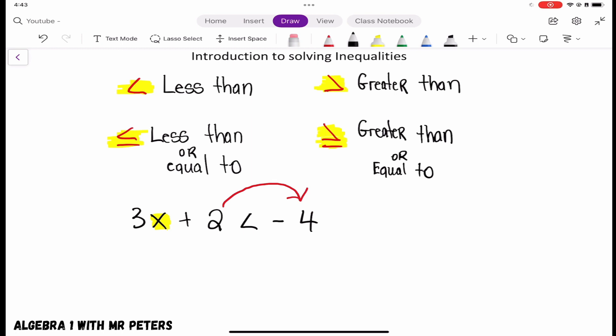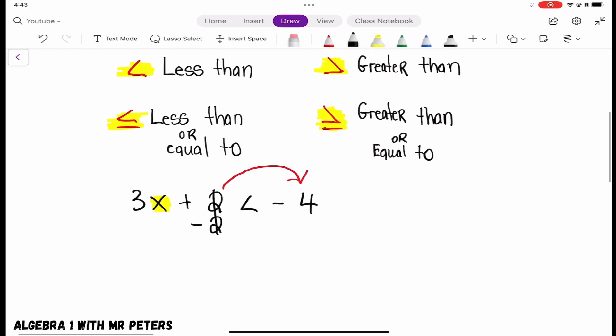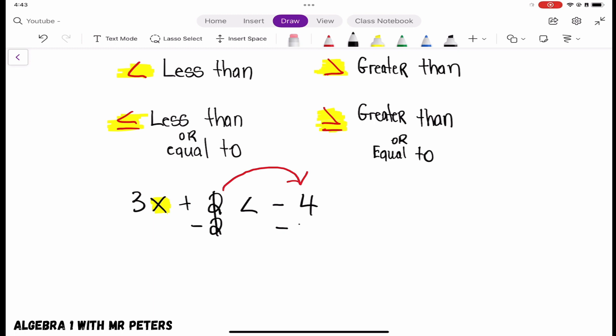Plus 2, the opposite of adding 2 is subtracting 2. So we subtract 2 from itself to cancel it out. And then we want to go on the opposite side of the inequality symbol and subtract 2 from its like term.